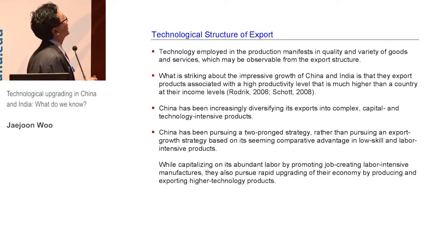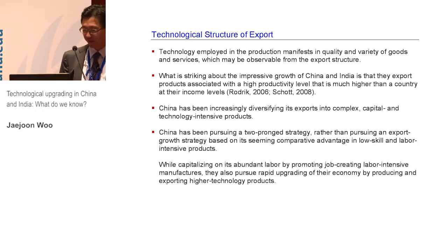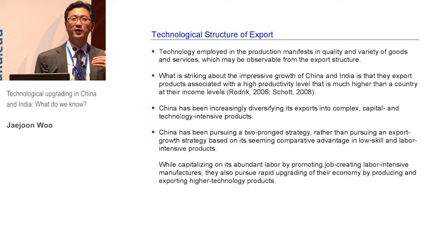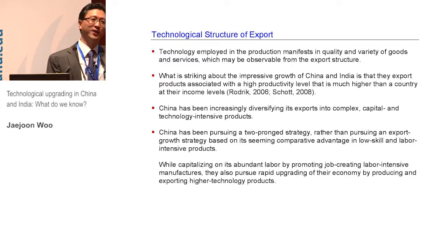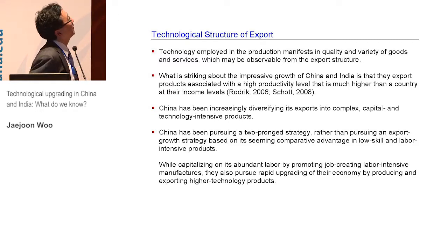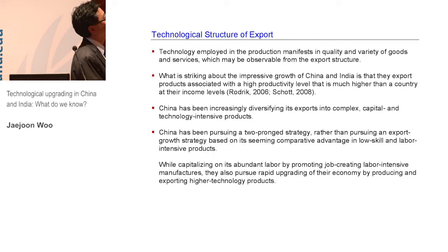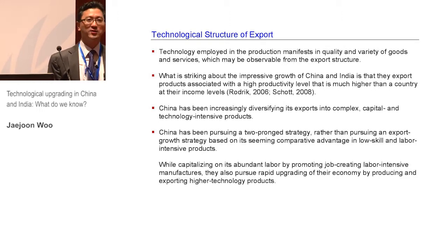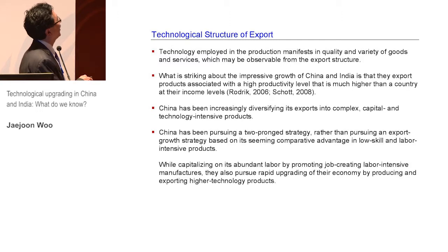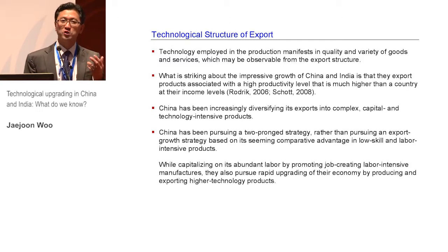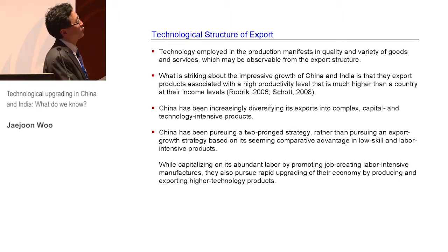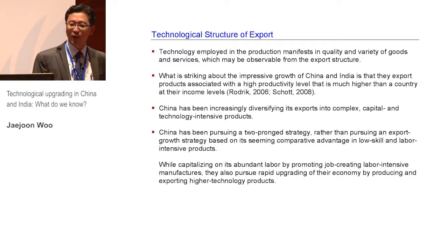This is something cutting across the themes we saw — Justin Lin and others talking about upgrading and moving from low income to middle income and then to higher income. But clearly, if they stuck to their comparative advantages based on simple low-skill and labor-intensive products, then probably China's export profile would have looked very different from what it does now. They took a two-pronged approach: one, trying to create lots of jobs to absorb surplus labor, but at the same time trying to upgrade the economy quite rapidly.